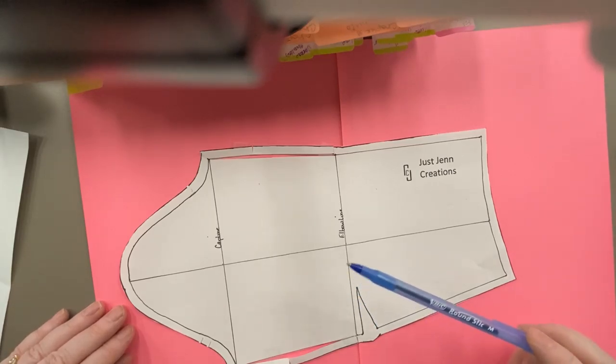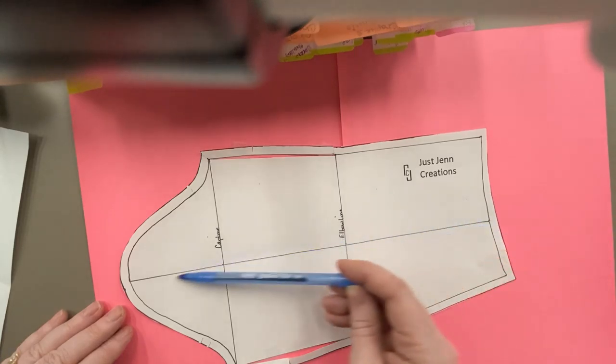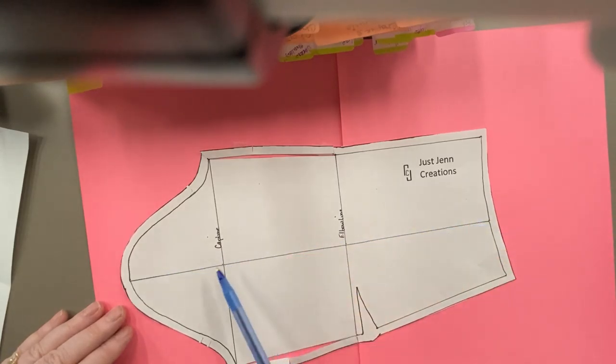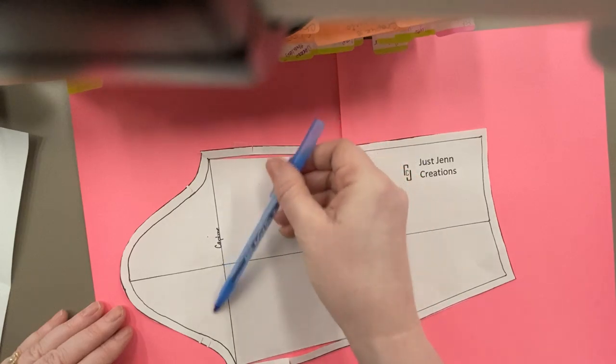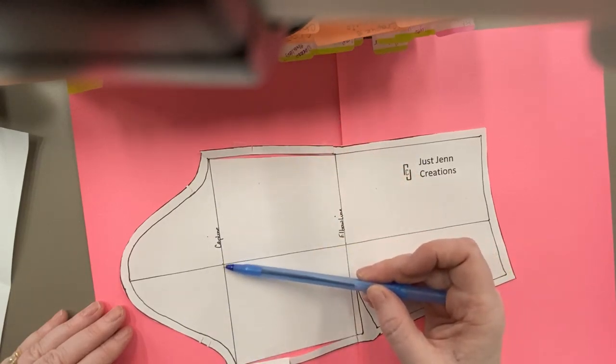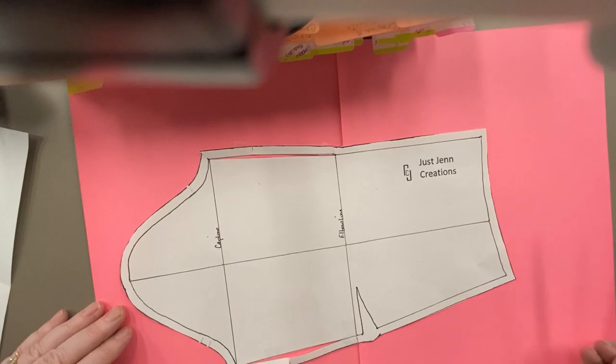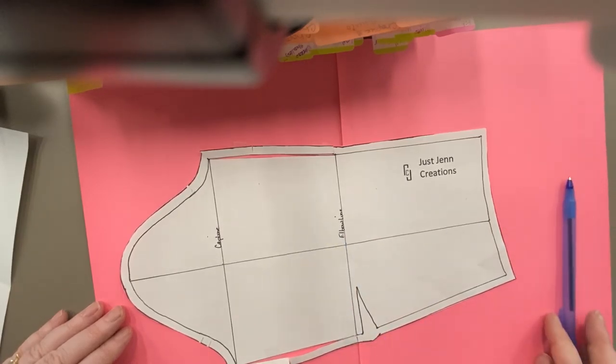Now this is one that slash method is not friendly. Because slash method, you cut all the way up the longitudinal arm. You cut all the way out the cap line, all the way out the cap line, and you spread it right here dead center. Seam method on this one is much easier.